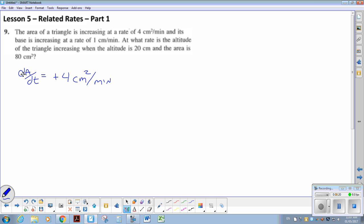And its base is increasing. So I'm just giving myself a picture here. Here's my triangle, my base, my height. So my base, dB by dt, is positive 1 centimeter a minute. We want to know dH by dt, that's the unknown. Then we know the height is 20 and area is 80.